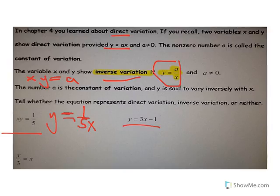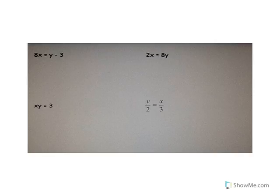Here we've got a constant, so it's neither — this does not go through the origin. This next one is going to be direct variation. Looking at these again, we've got a constant here, so that means it is neither direct nor inverse variation. Here, when y goes up, x goes up; when y goes down, x goes down — so that is direct variation.